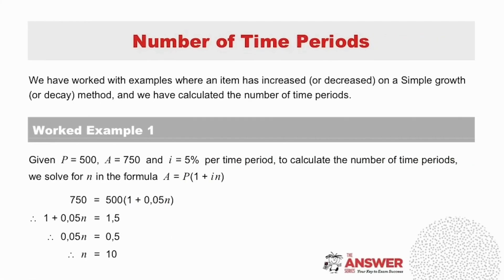In the past we've been able to calculate the number of time periods working with the simple growth or decay formulae. Let's refresh our memory now by looking at this first example. Here P is 500, A is 750 and I is 5%. Using the simple increase formula, by substituting our values we are able to solve the straightforward linear equation, getting an answer of n equals 10 for the number of time periods.